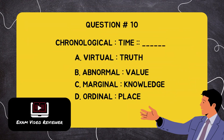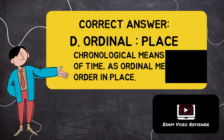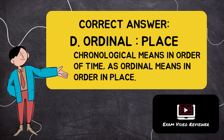Question number ten: chronological is to time as blank. Letter A: virtual is to truth, Letter B: abnormal is to value, Letter C: marginal is to knowledge, Letter D: ordinal is to place. The correct answer is Letter D, ordinal is to place. Chronological means in order of time, as ordinal means in order of place.